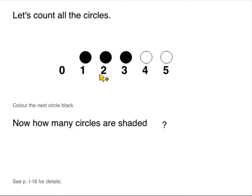So here we have how many black circles. Well you could count them — one, two, three — or we should be able to see that the last one is above the number three. And if I color in one more, I've got four circles, so one more than three is four.